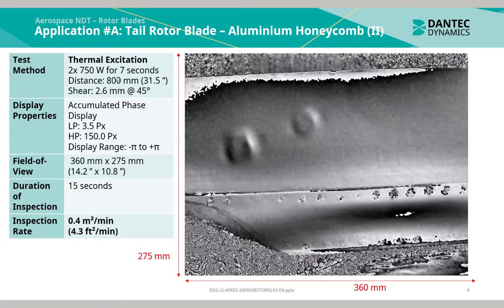This application was performed using thermal excitation. Two 750W halogen heat lamps were applied for 7 seconds. The duration of the entire inspection took approximately 15 seconds, yielding an inspection rate of 0.4m² per minute.